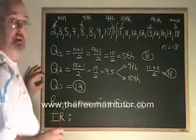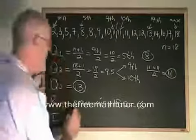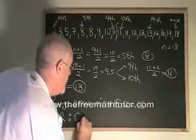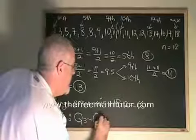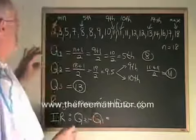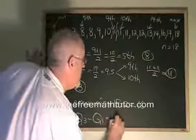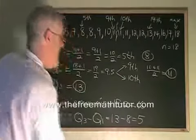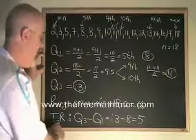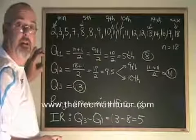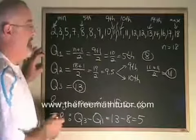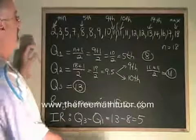Our interquartile range is q3 minus q1, which in this case is equal to 13 minus 8. Our interquartile range, our IR, is equal to 5 for this data.